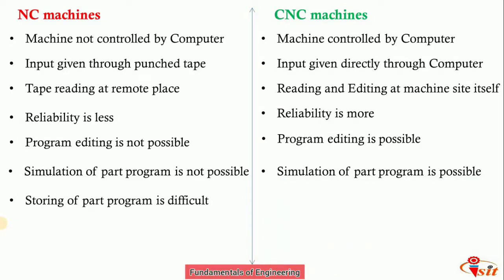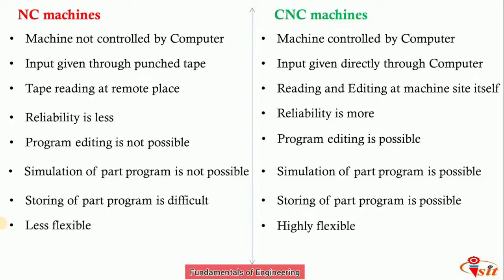In NC machines, we cannot store the part program, but in CNC machines, using the computer with its memory advantage, we can store the part program and easily edit it. NC machines are less flexible, whereas CNC machines are highly flexible because of the ability to store, read, and edit the part program. NC machines are less capable, and CNC machines have higher capability.